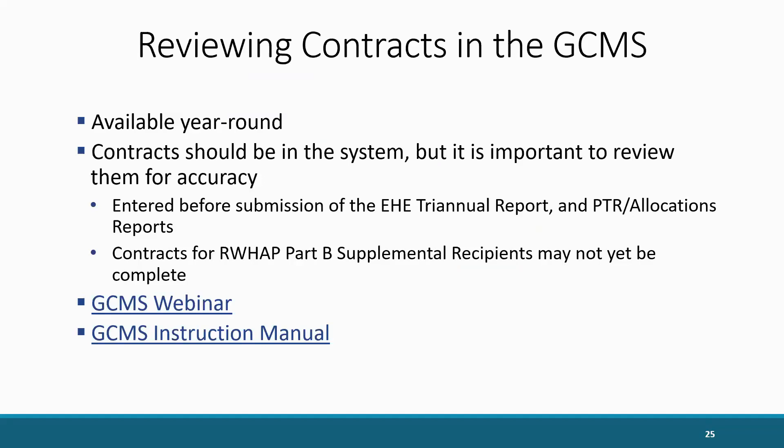The GCMS is available year-round, which allows recipients to regularly review and update contract information. Contracts for Ryan White recipients should already be in the system before the completion and submission of the PTR or allocations report. Note that Part B supplemental PTRs are not due until the end of December, so contracts may not yet be complete for Part B supplemental recipients. Although these contracts have been added by your agency, you should still review them to ensure the data are still correct, as there may have been contract changes since those reports were submitted. For a more in-depth overview of the GCMS, I highly recommend the Completing the GCMS webinar and the GCMS Instruction Manual on the TargetHIV website.